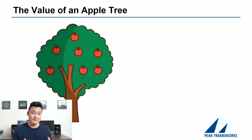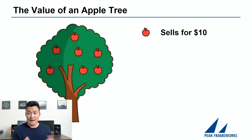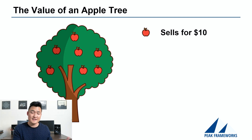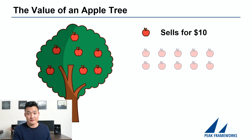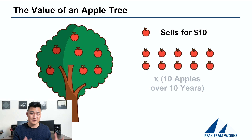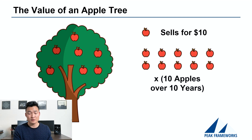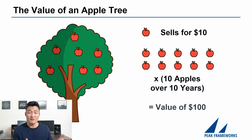Let's say a unit of apple sells for $10. An apple tree, like many assets, has a finite period of life — let's say this apple tree will live for 10 years. So $10 per unit multiplied by 10 years gives us a maximum value of $100.